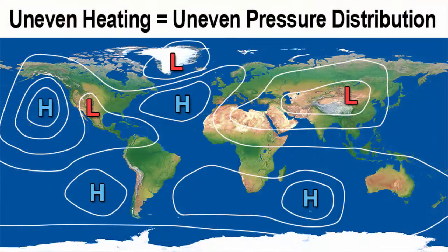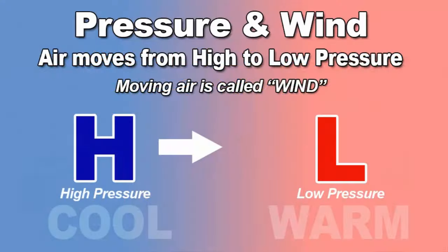So why does all this uneven heating of the Earth's surface matter beyond determining where it's hot or cold? As this pressure map shows, it affects much more — uneven heating of the Earth's surface leads to uneven pressure distribution, with areas of high and low pressure. Air moves from high to low pressure, and when air moves we call that wind. So the Sun not only determines heat, it determines pressure and drives the movement of wind. Hopefully you now have a much better understanding of how the Sun affects weather — check out the links below and explore our other Weather Basics videos.